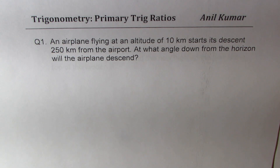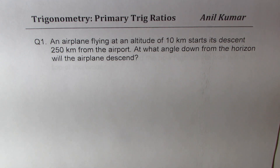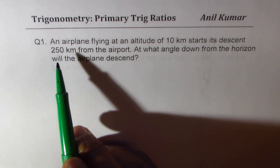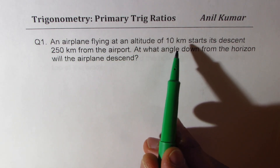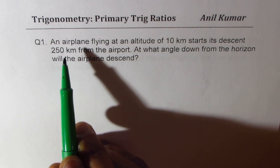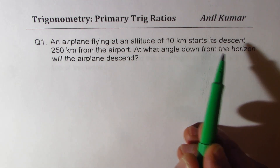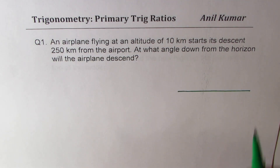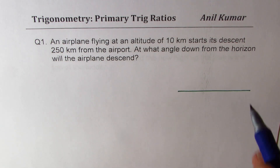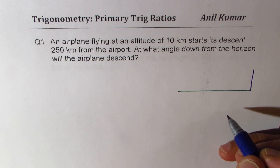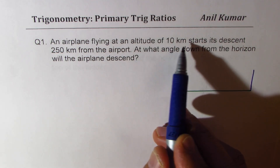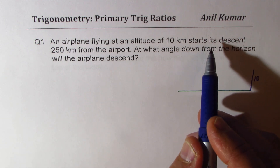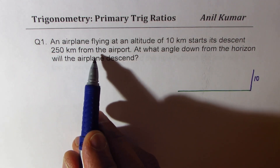Question number one. The first part is always to sketch and then figure out which trigonometric ratio to apply and how to find the solution. The airplane is flying at an altitude of 10 kilometers — altitude means height. So let's make our triangle here. This is the ground, and that's the height of the airplane, which is 10 kilometers.